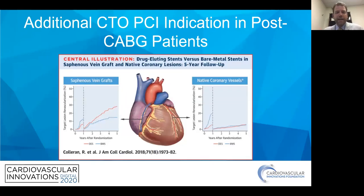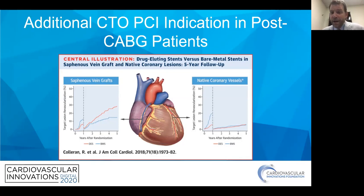An additional CTO-PCI indication actually occurs in patients who've had prior bypass. Data in JACC showed that the patency of saphenous venous grafts compared to CTO-PCI has a huge delta. We used to think it was because we were treating saphenous vein grafts with bare metal stents, but with drug-eluting stents it was paradoxically worse. If you compare target lesion revascularization or failure rates treating vein grafts versus the native lesion, there's a big push to treat native vessels because they have much better longevity rates.